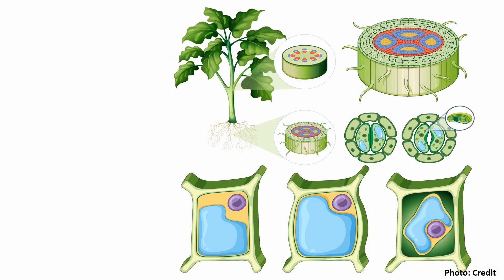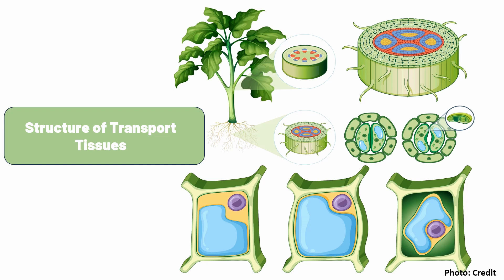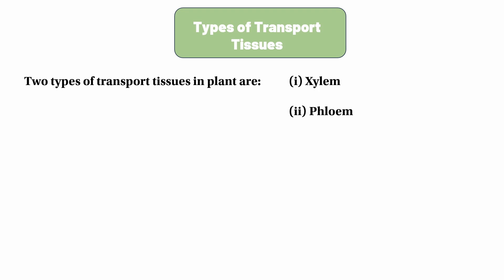As you can see in this video, we will be able to use a stretcher or transport tissue implant. Two types of transport tissue implant are xylem and phloem. Xylem and phloem are vascular tissue and plant bodies.